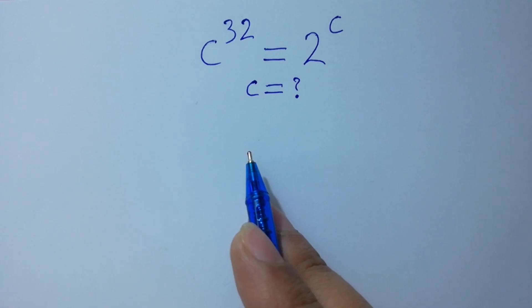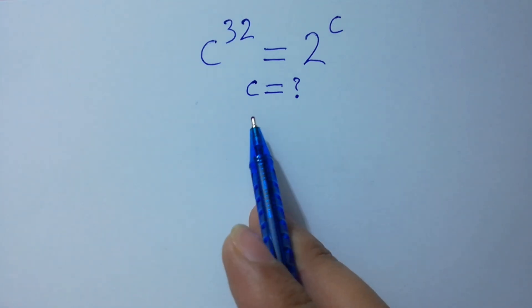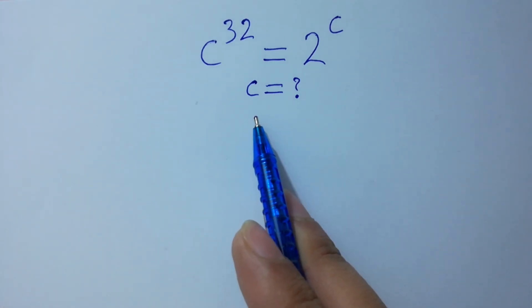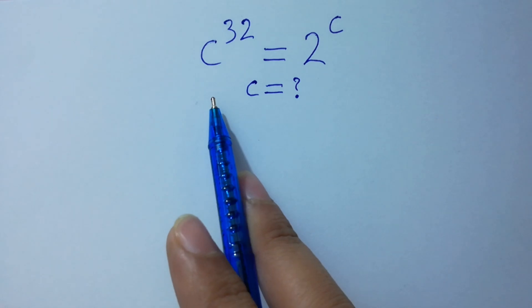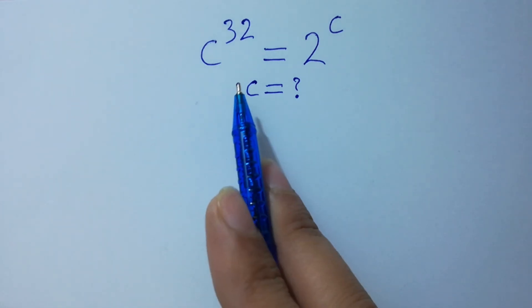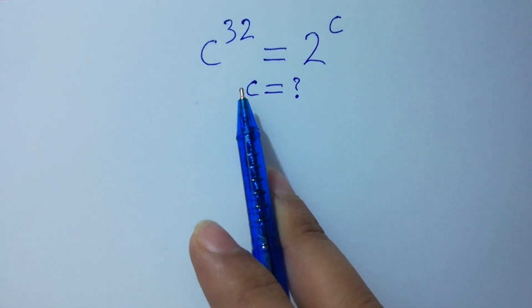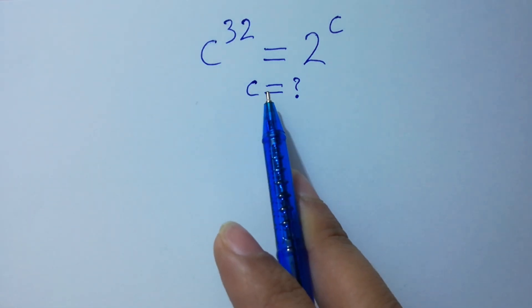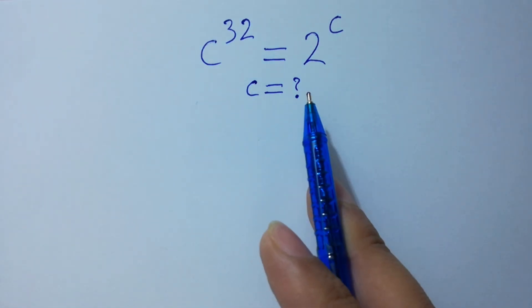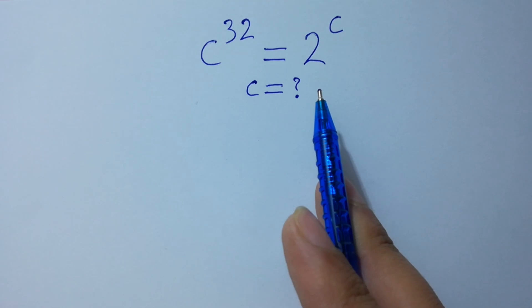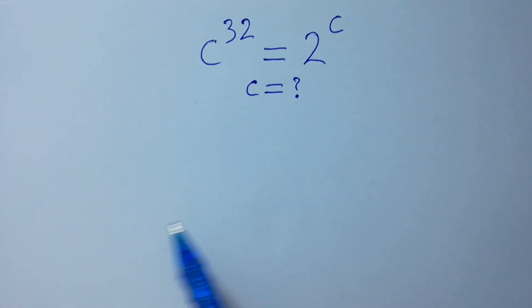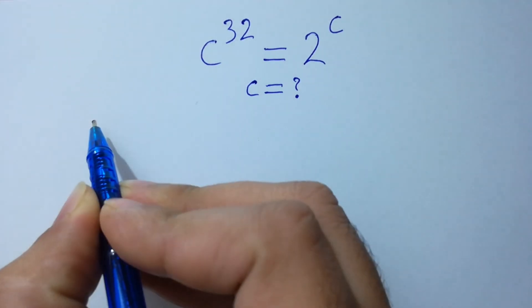Hello friends. Find the value of C if C to the power 32 equal to 2 to the power C. Let's have a solution.